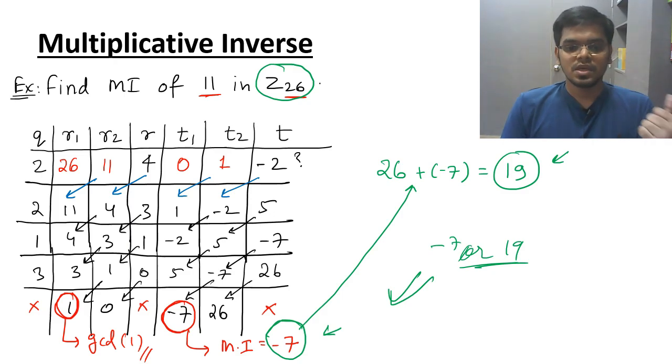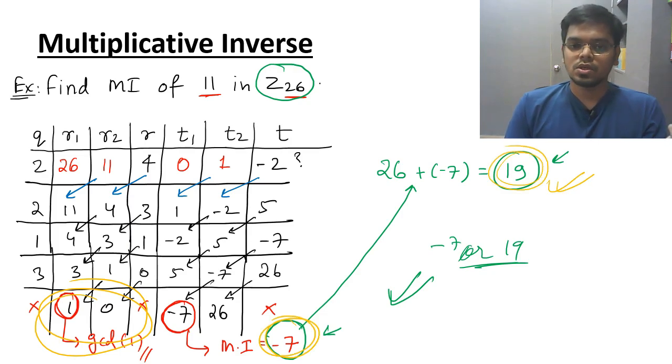You have understood some key points. Key point is GCD is always 1 and you can get answer in negative or you can get the answer in positive. To get the answer in positive, you have to just see your domain which is 26 and add that value. And you will get your answer in the positive form. So that's it for today.